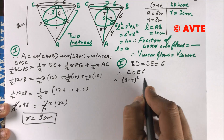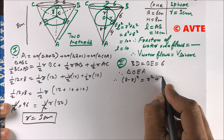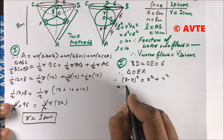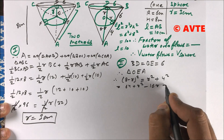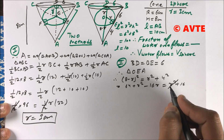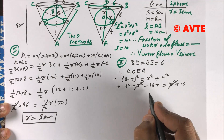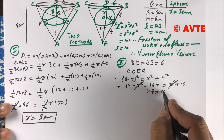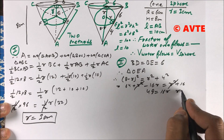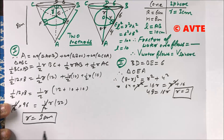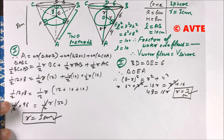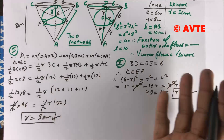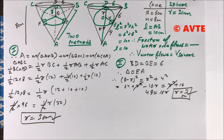In triangle OEA, applying Pythagoras: (8 − R)² = R² + 4². Expanding: 64 + R² − 16R = R² + 16, so 48 = 16R, giving R = 3. By both methods you get R = 3 centimeters. Method one uses the tangent-area approach and method two uses Pythagoras, but in both you find R = 3.